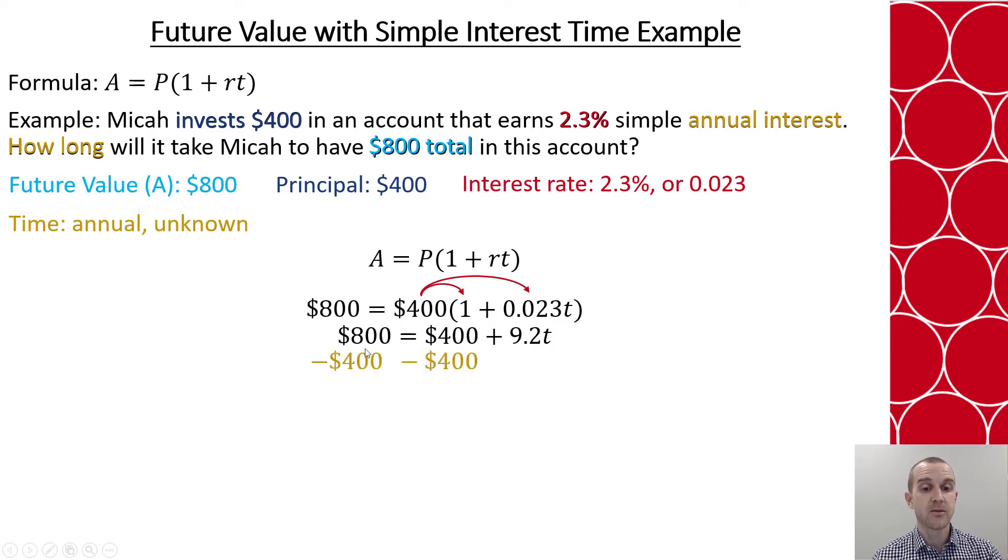This will give me $800 equals $400 plus 9.2t. Now I'll subtract 400 from both sides so that 400 minus 400 becomes 0. 800 minus 400 will give me $400. Now I divide both sides by 9.2. So 9.2 divided by 9.2 is 1, and that will give me approximately 43.478 years.